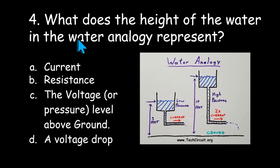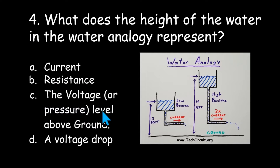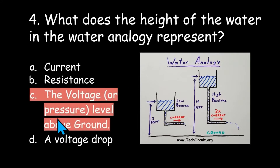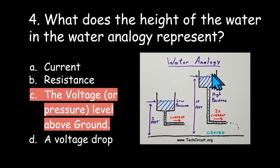What does the height in the water analogy represent? The options are current, resistance, the voltage or pressure level above ground, or a voltage drop. The answer is C: the voltage or pressure level above ground. The height of the water represents the pressure required to push the water through the pipe, which is analogous to the potential energy of the voltage pushing current through a wire.